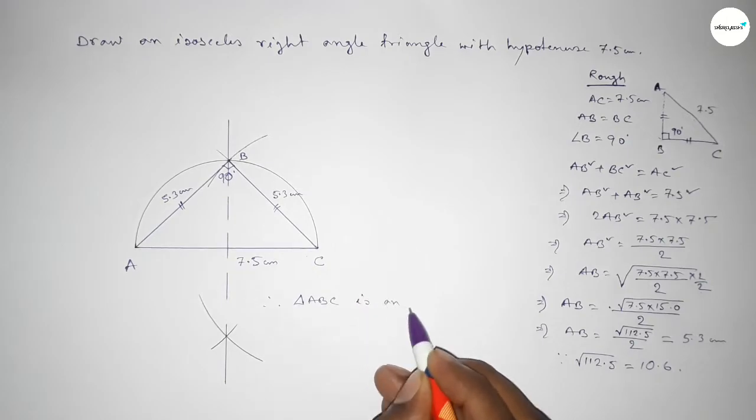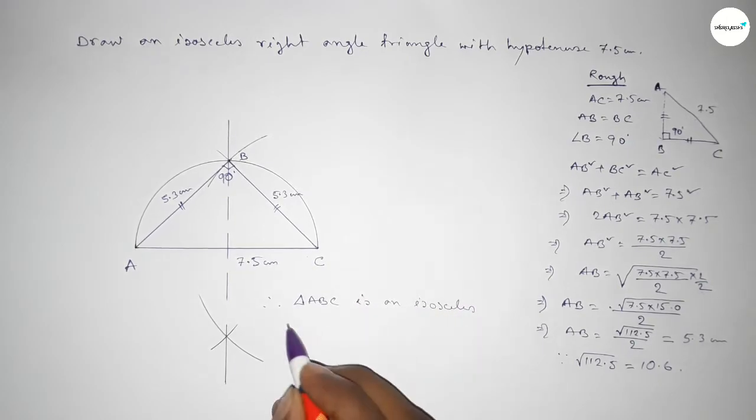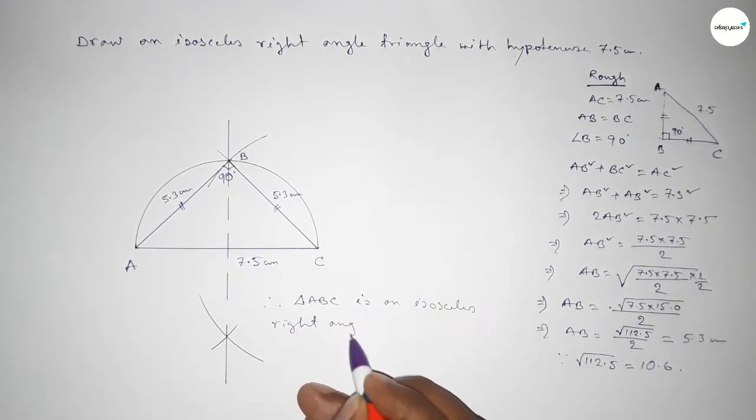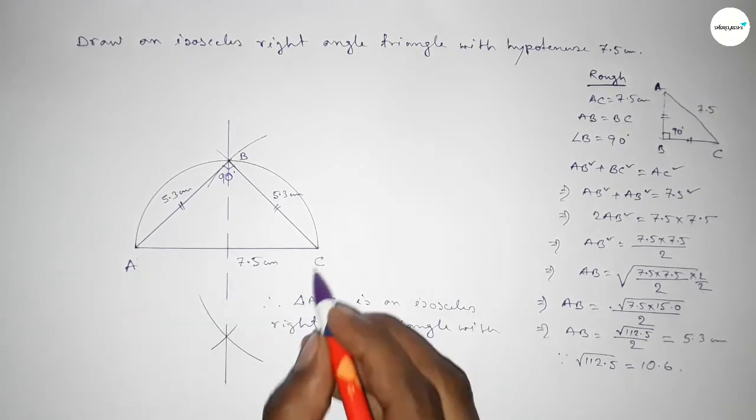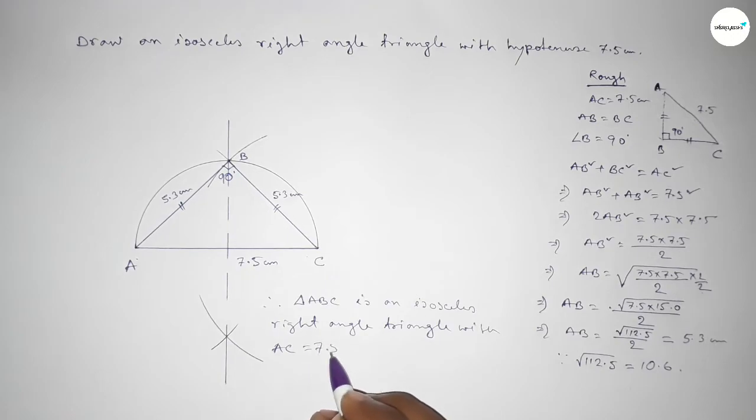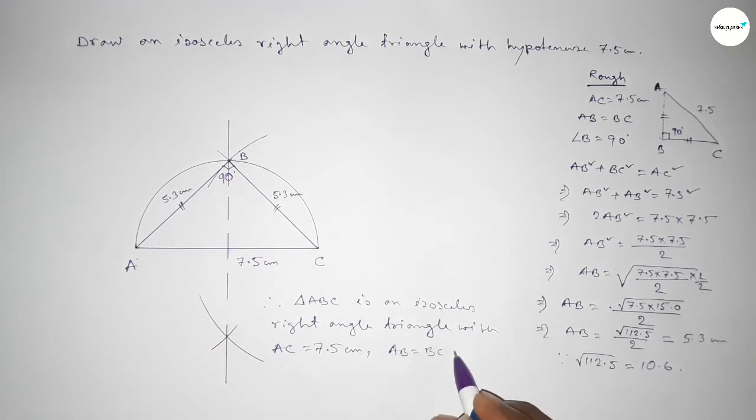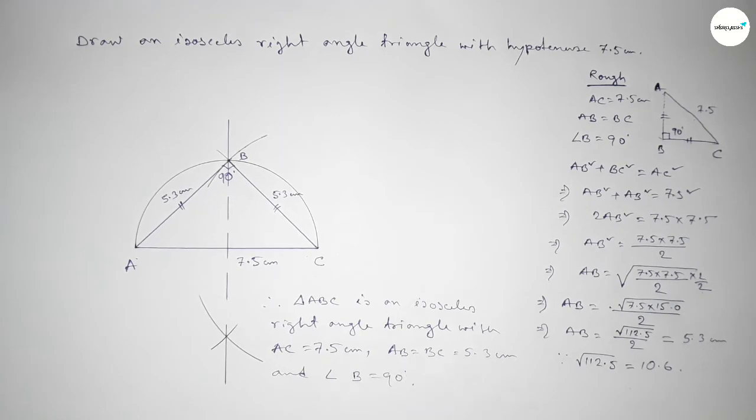Therefore, triangle ABC is an isosceles right angle triangle with given only hypotenuse AC equal to 7.5 centimeters. Now the two sides are equal: AB equal to BC equal to 5.3 centimeters, and angle B equal to 90 degrees.